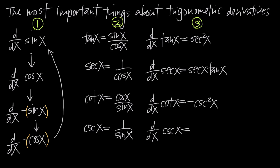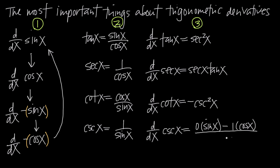Quotient rule tells us that to take the derivative of 1 over sine of x, we first take the derivative of the numerator — the derivative of 1 is 0 — multiply by the denominator sine of x, then subtract the numerator 1 multiplied by the derivative of the denominator. The derivative of sine of x is cosine of x. Then we divide by the denominator squared, sine squared of x.